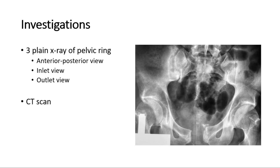For investigations, three-plane film radiographs are required to completely assess the pelvic ring, which include the anterior-posterior, inlet view, and outlet view. However, in the trauma setting, often a CT scan is performed. This plain x-ray shows an open-book pelvic fracture.